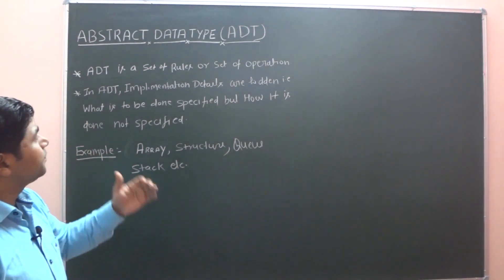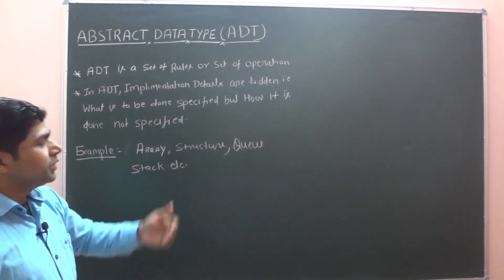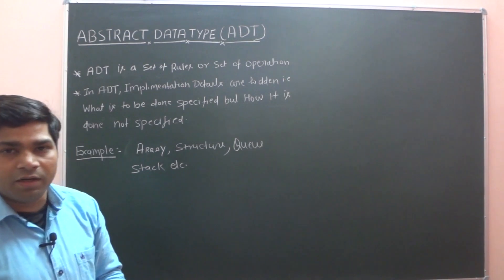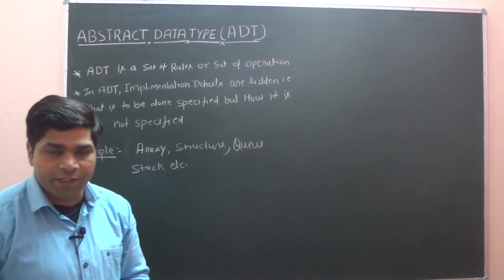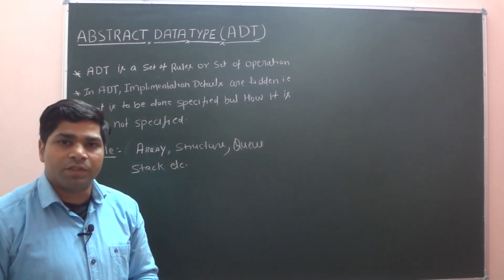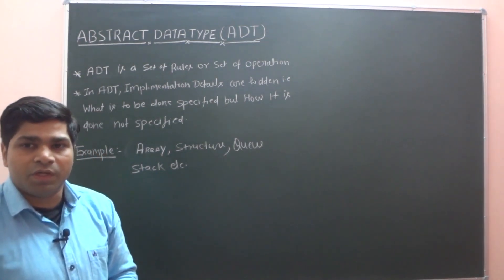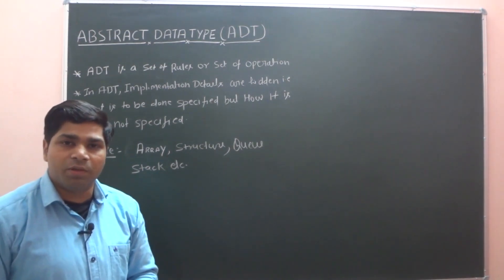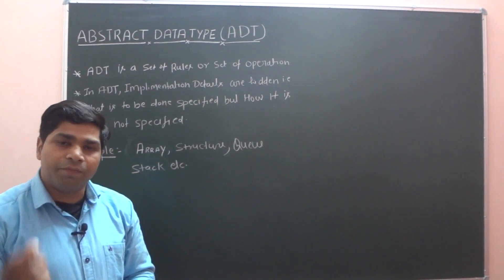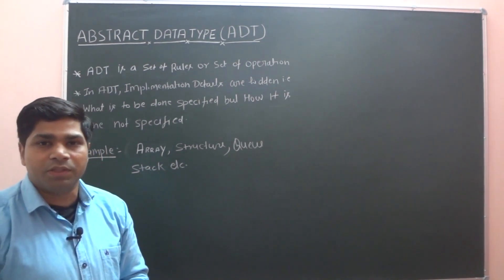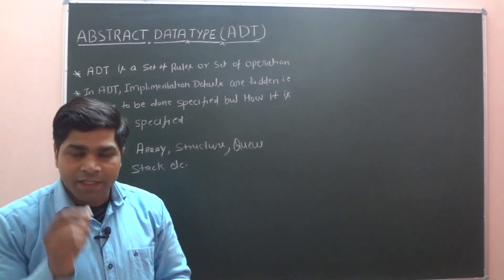We can say that by using a data type we can declare a variable, like 'int a'. Here, 'a' is a variable of integer type. This is called a data type.